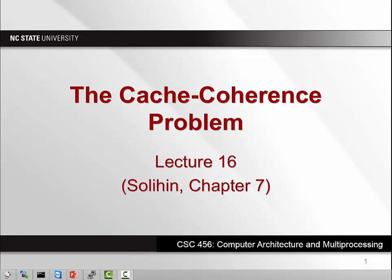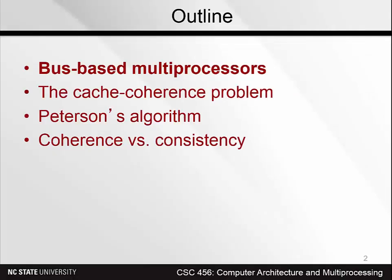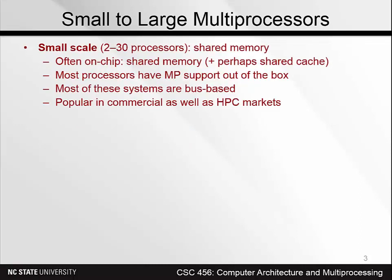Today we want to introduce the cache coherence problem, and we want to do that by focusing on four different issues. The first is a description of bus-based multiprocessors, and then we go on to other issues that have more in relation to cache coherence.